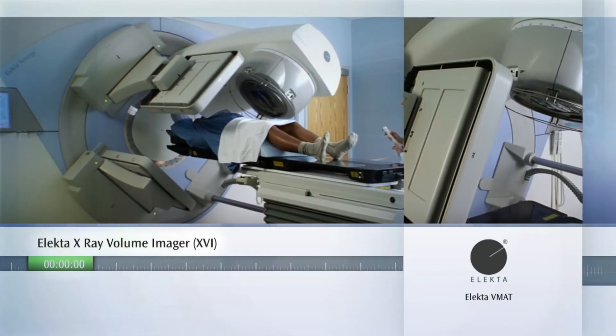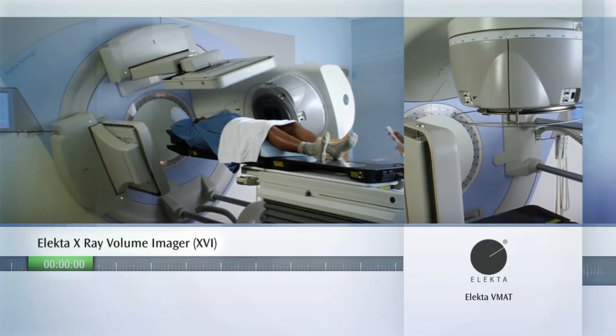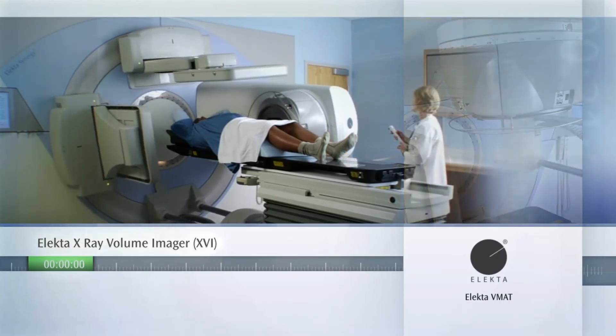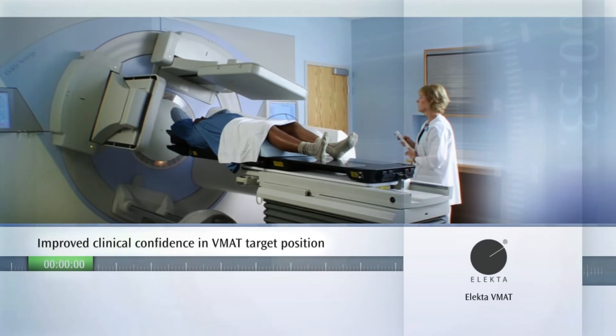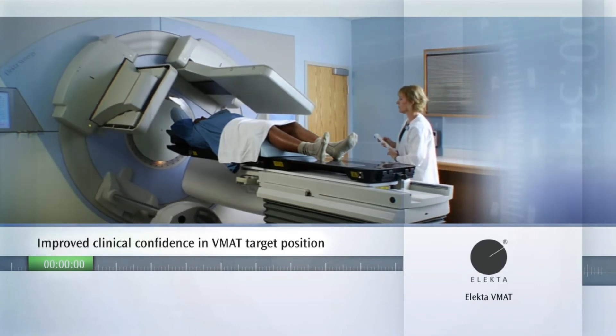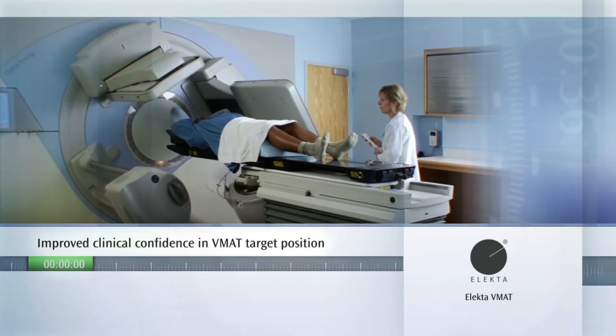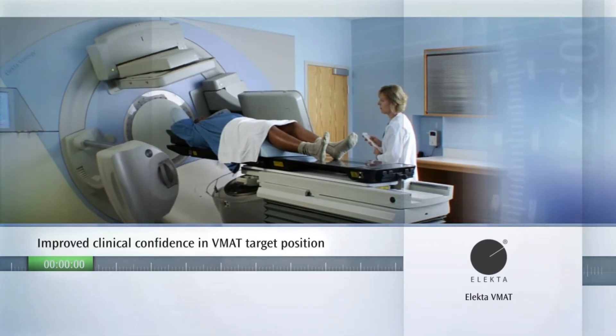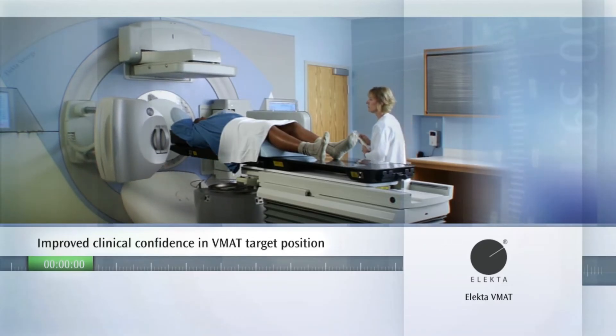Volumetric modulated arc therapy treatment involves three basic steps: diagnosis, treatment planning, and delivery. As a part of the diagnosis, the medical team generates three-dimensional diagnostic images, usually CT and/or PET of the patient's anatomy, and then uses these images to specify the dose of radiation needed to treat the tumor. Volumetric modulated arc therapy beams can be as small as 2.5 by 5 millimeters. That's the size of a pencil tip.